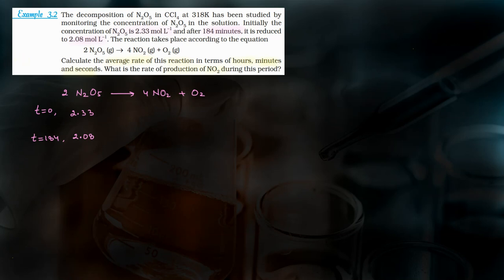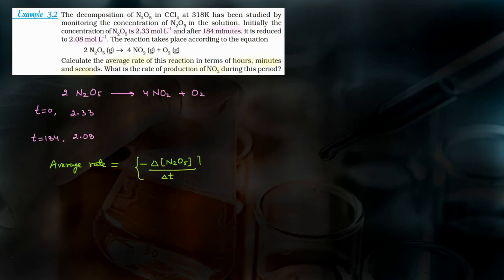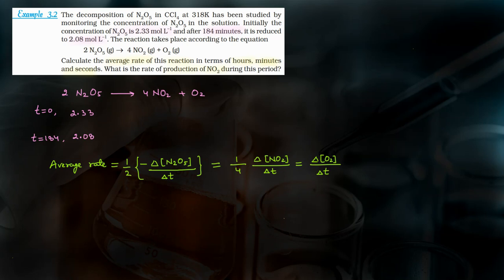First, we should know how to write the average rate for any reaction. The average rate for this reaction will be equal to the change in concentration of reactants — since the reactant concentration decreases, we take a minus sign: minus (1/2) × Δ[N2O5] / ΔT. Because stoichiometric coefficients are also present, this equals (1/4) × Δ[NO2] / ΔT, which also equals Δ[O2] / ΔT. This is the average rate of reaction.